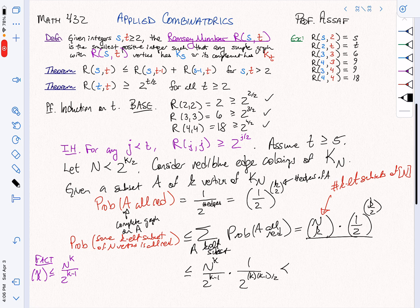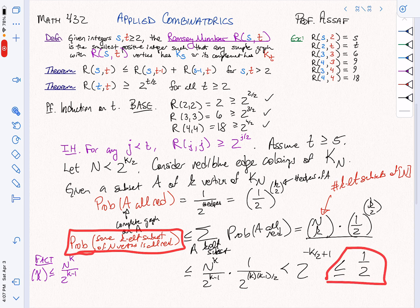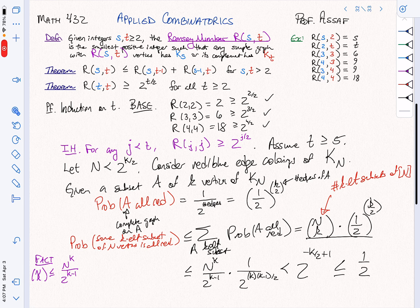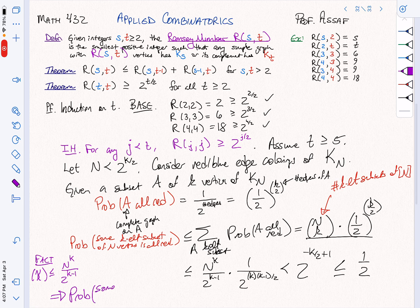So what is this? Well, this is strictly less than 2 to the minus K halves plus 1, which is less than or equal to a half. So what's the point? The point is the probability that some K element subset is all red is strictly less than a half. So if we're going to combine that up, this implies that the probability of some K element subset is all red or all blue is going to be strictly less than one half plus one half, which is one.